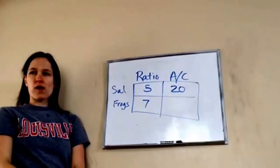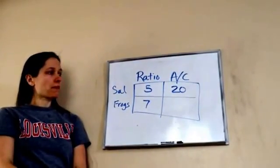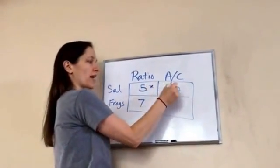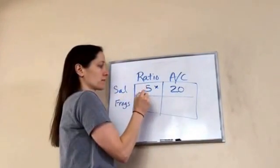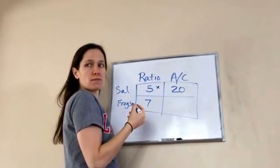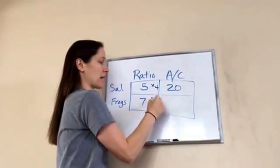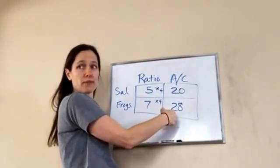It's been a while ago. I think you divide something. Close. We went times what equals 20? 5 times what equals 20? 5 times 4, right? So, since we did this times 4, this would be times 4. And our total number of frogs would be 28.